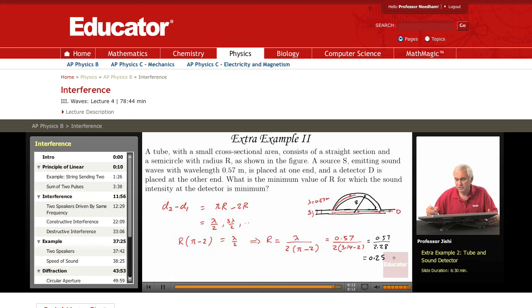So the minimum radius is 0.25 meters to give destructive interference at the detector. Thank you for watching.